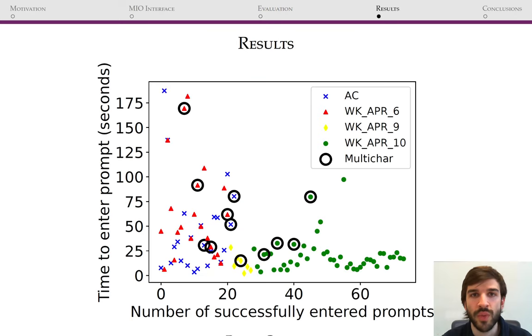Our results were mixed. Participant AC said the system was hard to use, but that if staff help her, she can learn to do it. She scored the system at 4 out of 100 points on the SUS scale.